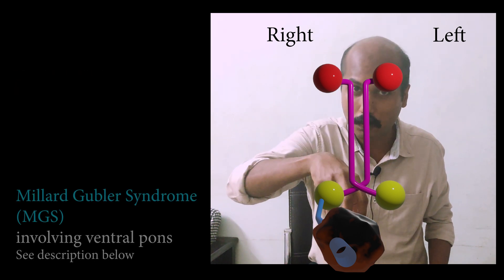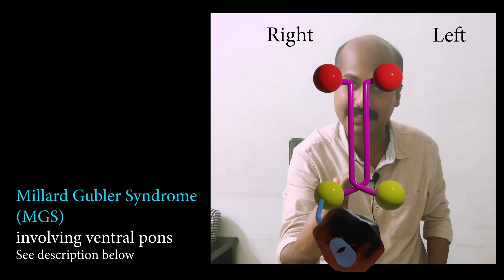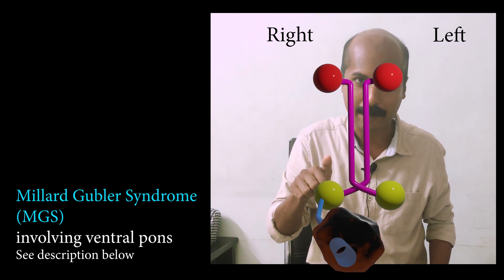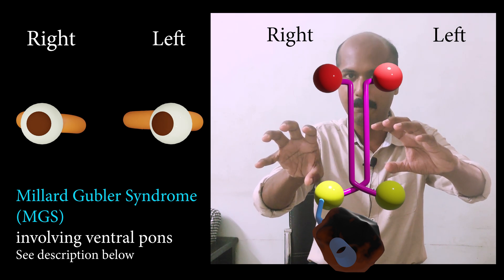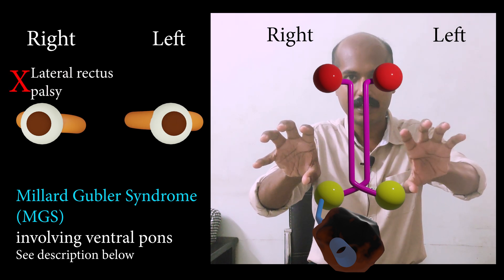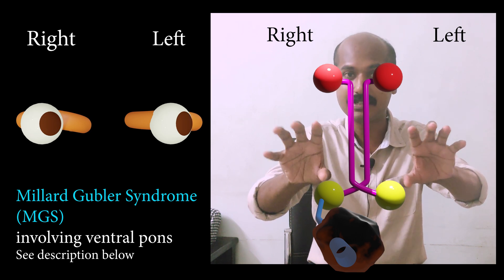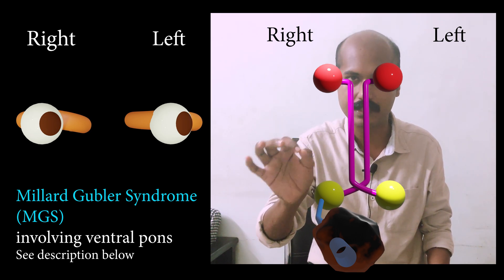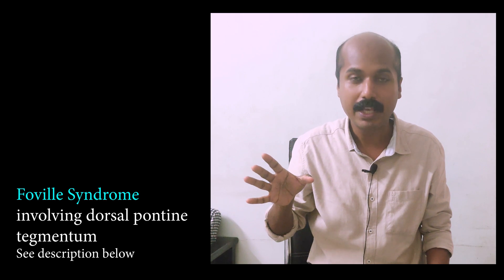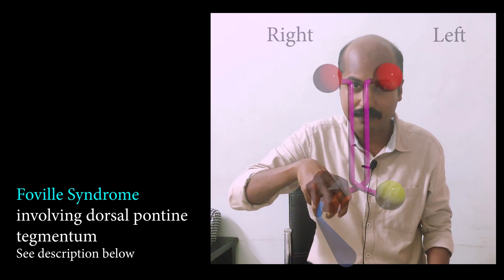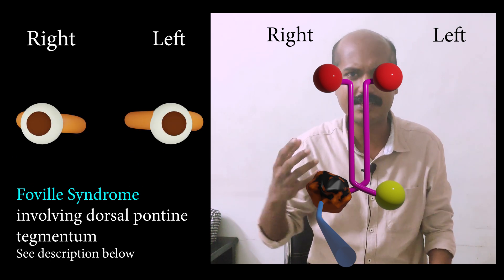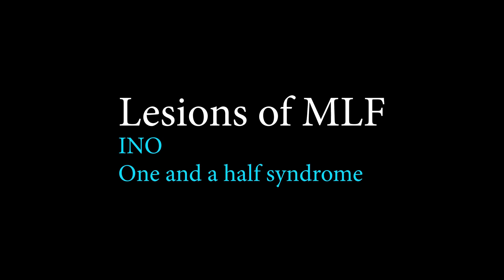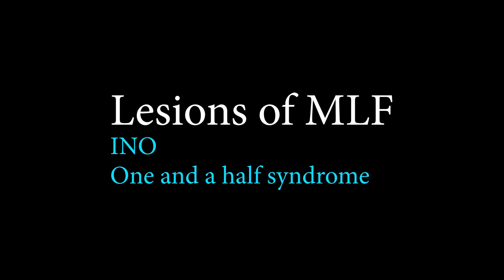This distinction can be found in Millard-Gubler syndrome, where the abducens nerve fascicles are involved but the abducens nucleus is spared. In Millard-Gubler syndrome, on rightward gaze the left eyeball will adduct but the right eyeball will not abduct due to lateral rectus palsy, while leftward gaze is intact. In contrast, in Foville syndrome the abducens nerve nucleus is affected, causing a right lateral gaze palsy because the nucleus is a gaze center.